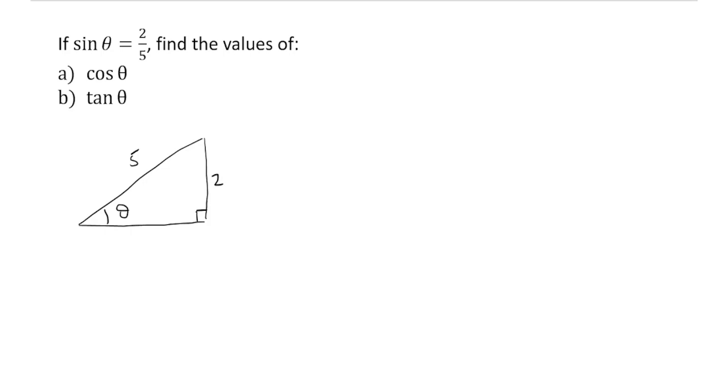Now, if that's the case, to calculate cos theta and tan theta, we need to know the adjacent side length. So we can label that as x and we can calculate it using Pythagoras theorem. Because x squared plus two squared will be equal to five squared, which means that x squared plus four will equal to 25.